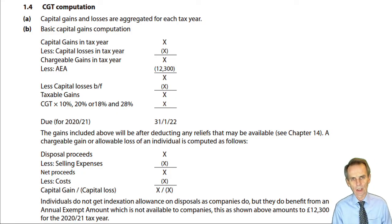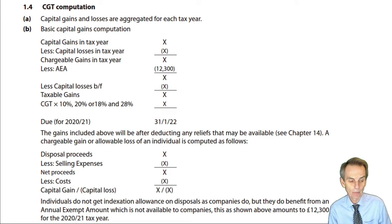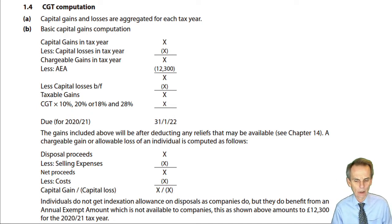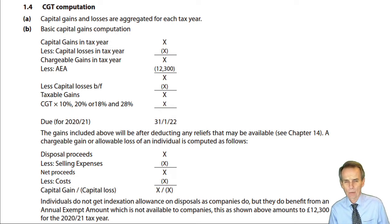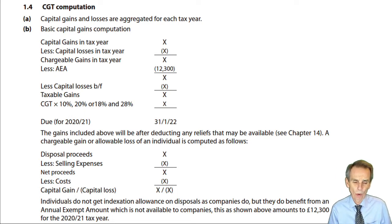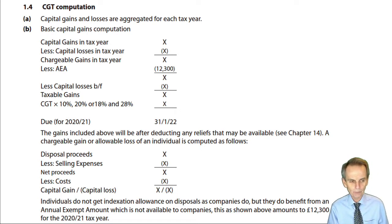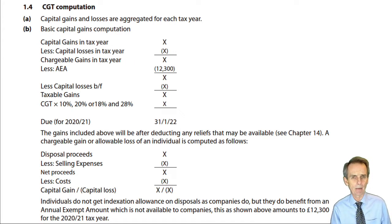In our first session on CGT we established that for a capital gain or allowable loss to arise, there must be a chargeable disposal of a chargeable asset by a chargeable person. Chargeable disposals normally represent sales but also include gifts — either outright gifts or sales at under value. All assets are chargeable unless specifically exempt, so be aware of those main exempt assets. You will always be dealing with a chargeable person, that is a UK resident, which will be a given in any exam question.